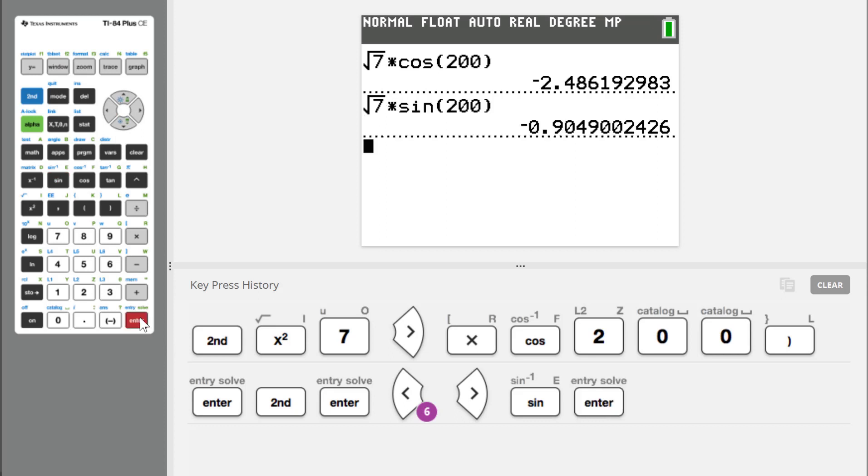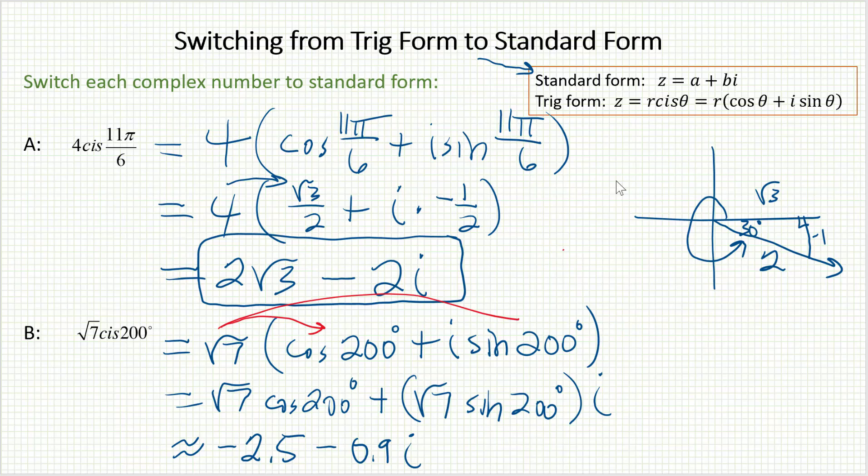So, about negative 2.5 and negative 0.9. And obviously, pay close attention to any rounding instructions, but that's it. Negative 2.5 minus 0.9i. Thanks for watching!